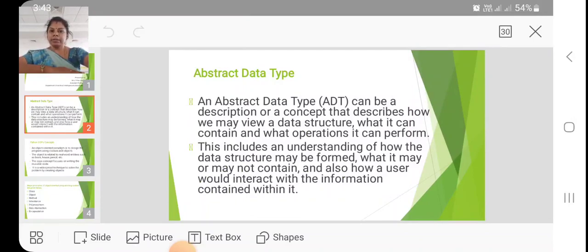An abstract data type can be a description or concept that describes how we view a data structure, what it can contain and what operations it can perform. This includes an understanding of how the data structures may be formed, what it may or may not contain, and how a user would interact with the information contained within it.